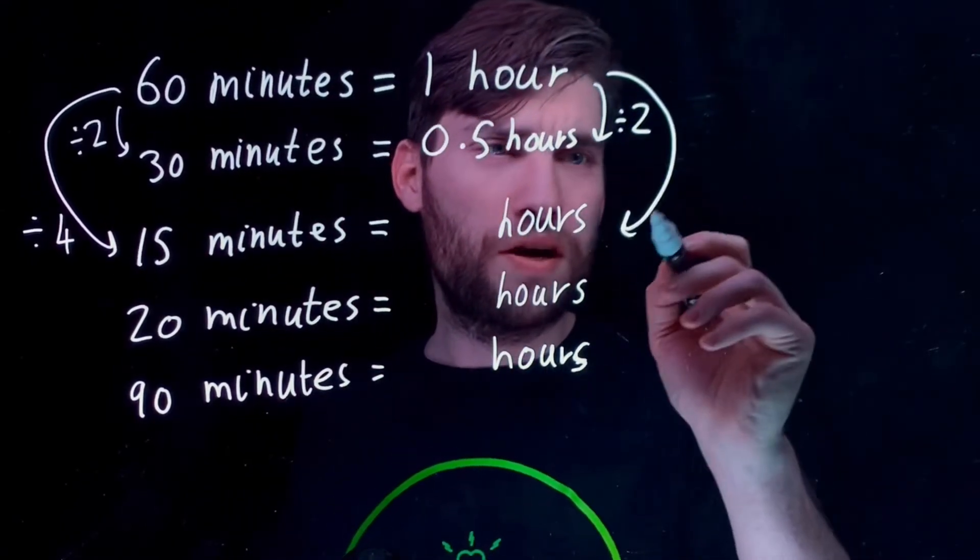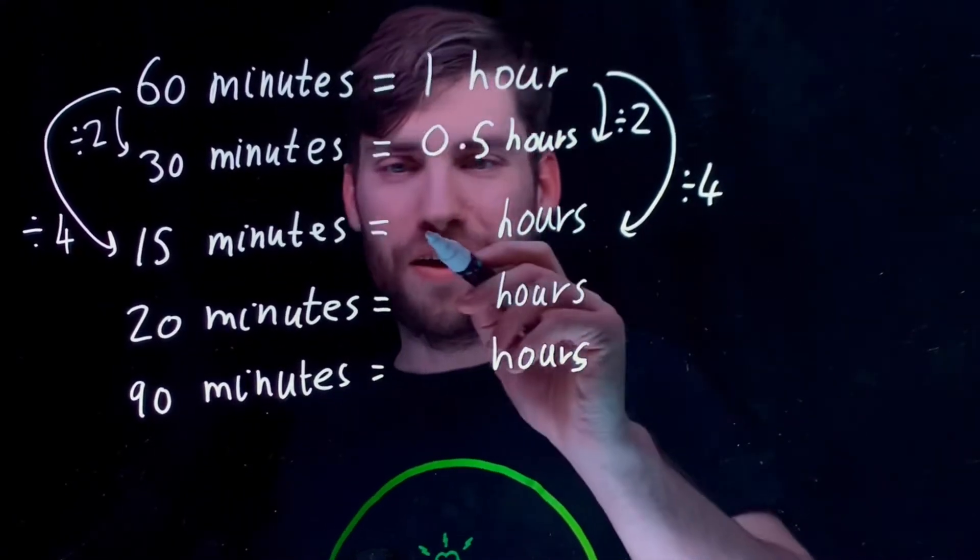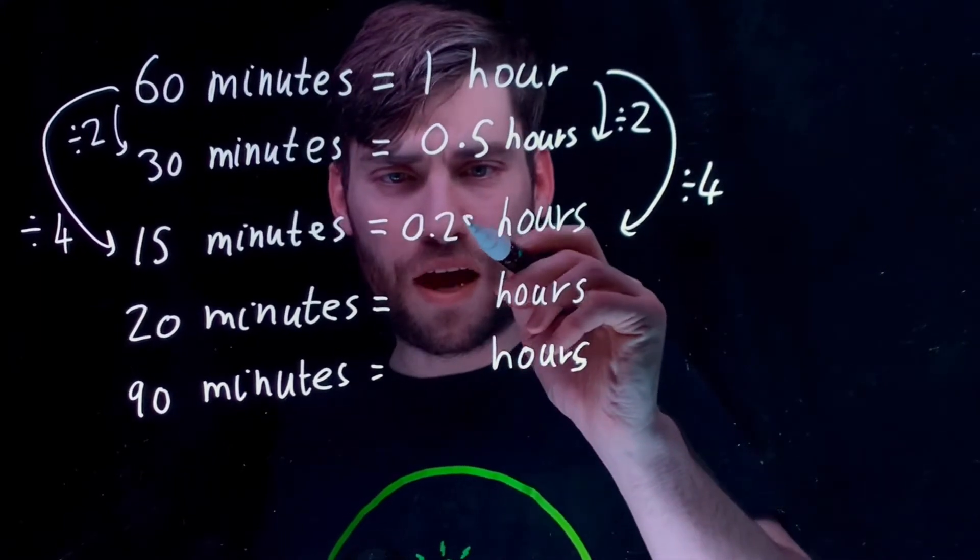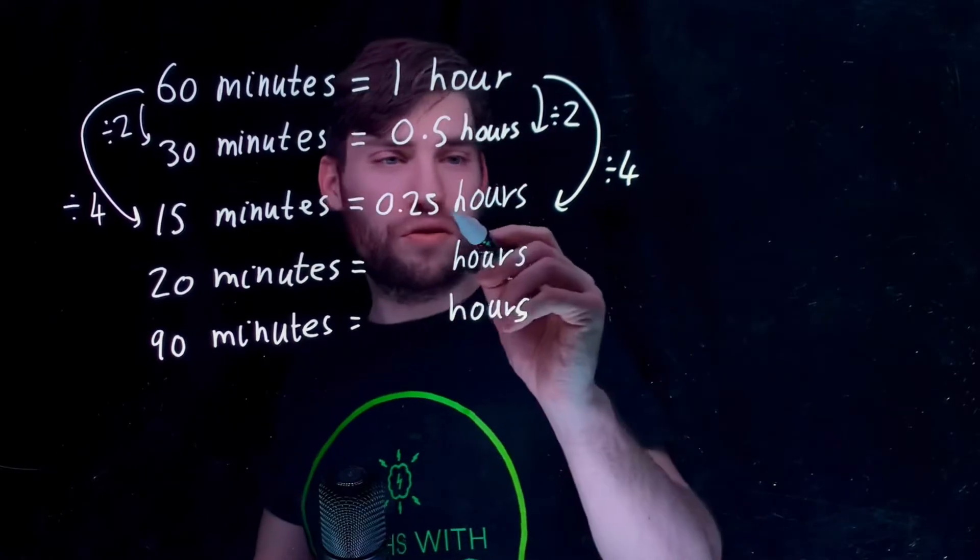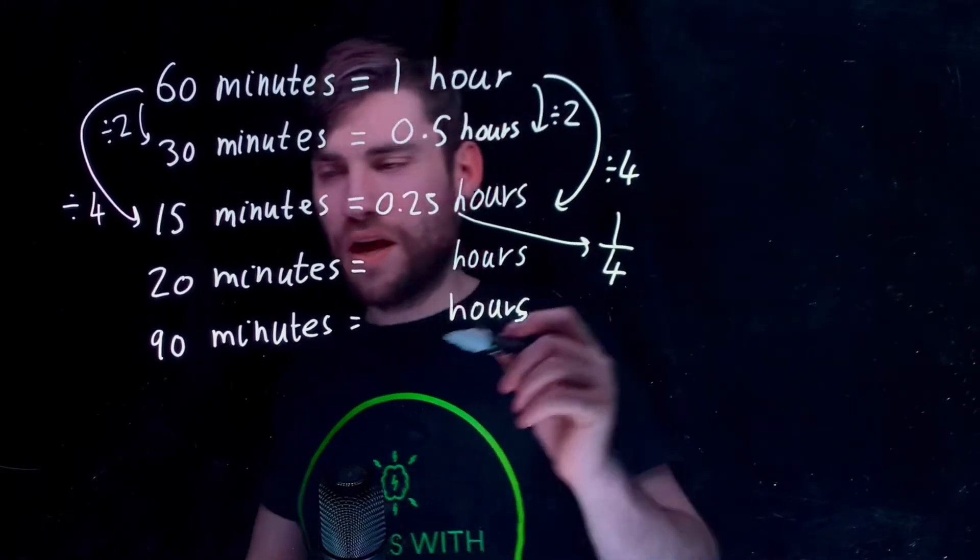So, therefore, going from this one to here, you are dividing by 4. And that is 0.25 hours because 0.25 is a quarter. Something like this is a quarter as a fraction.